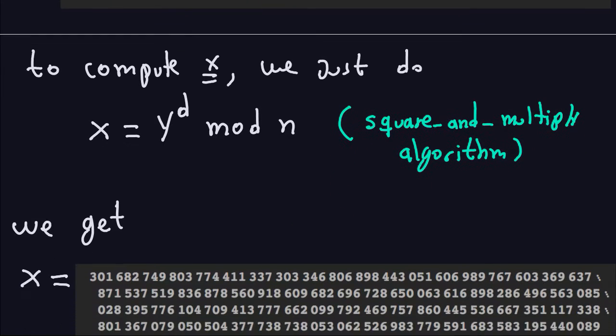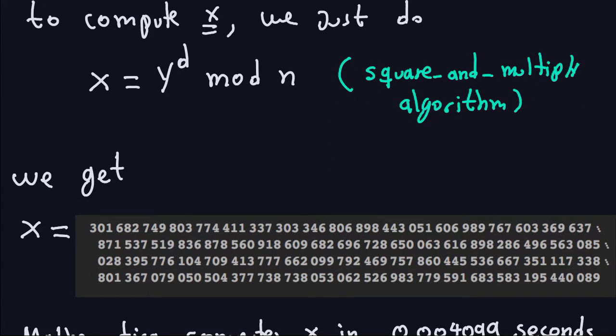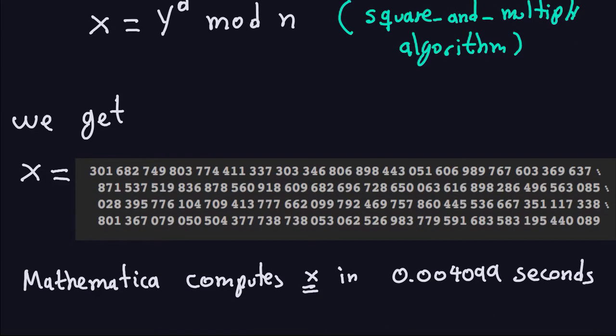And in fact, Mathematica computes this very easily and we get this number, so this is gonna be my x, and we compute it in 0.004099 seconds, which is very fast.